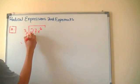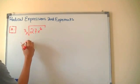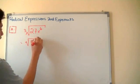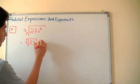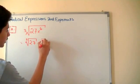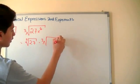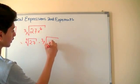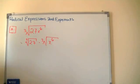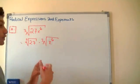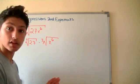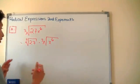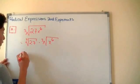Now we can separate this by taking the cube root of 27 multiplied by the cube root of x raised to the 6th power. We know x raised to the 3rd power times x raised to the 3rd power gives us x raised to the 6th power. So let's go ahead and write that down.